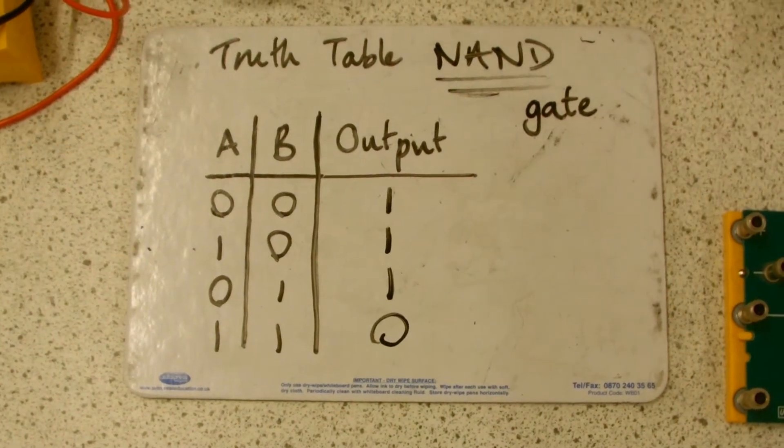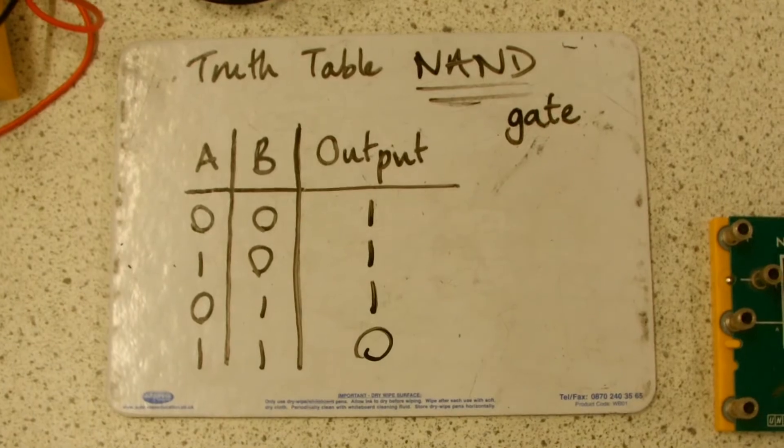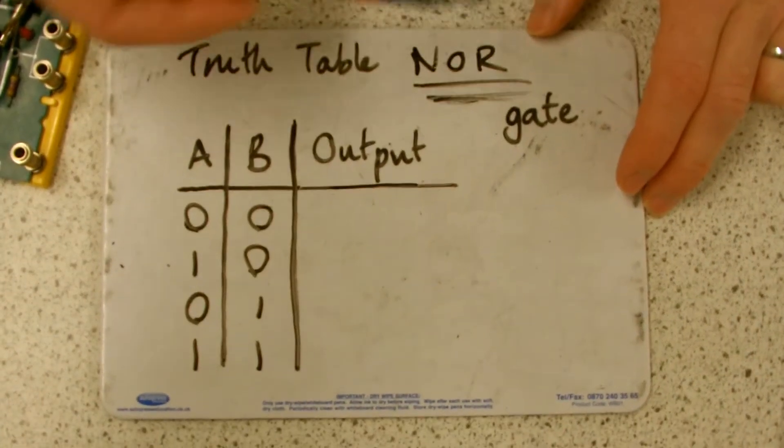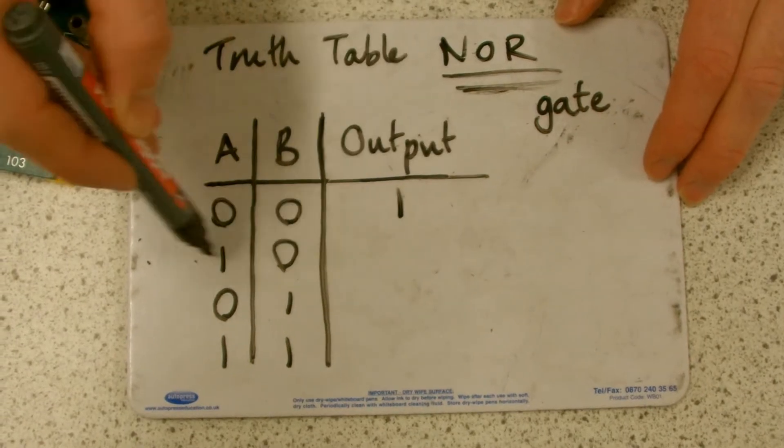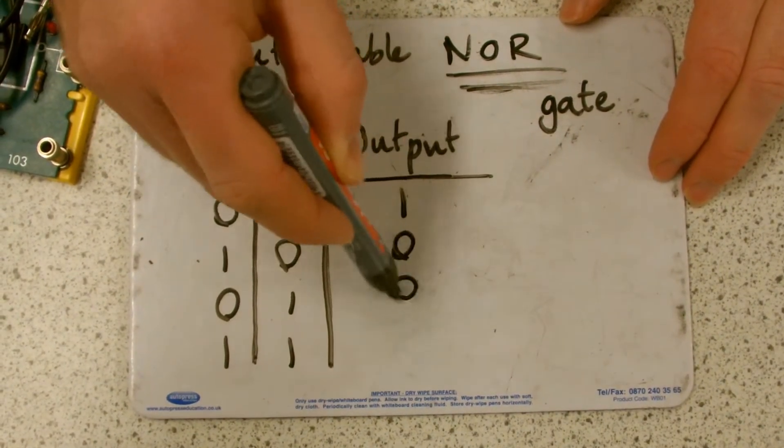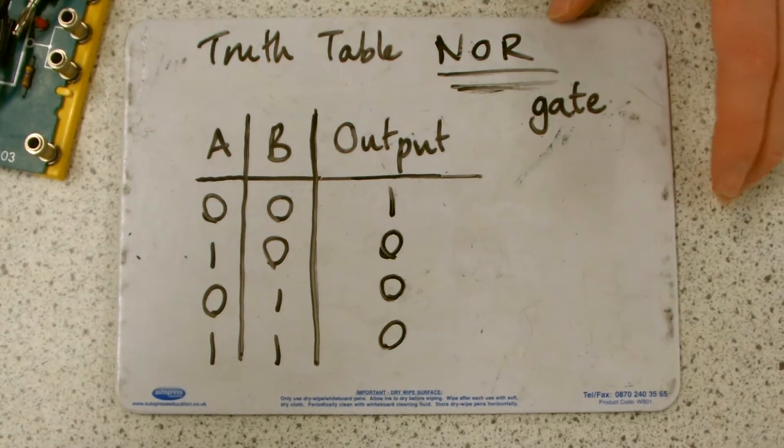And that's exactly what you saw on the logic gate. The NOR table is opposite to an OR, so in this case, if both of them are off, it's on. If either of them are on, it's off. Or indeed, if both of them are on, it's off.